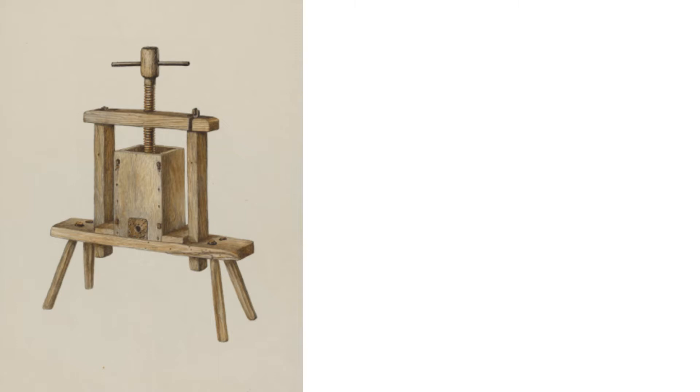In this type of press, a sheet of hessian is placed across the bottom of a square frame above a trough. A layer of pomace, four to five inches deep, is poured onto the hessian. The hessian is then folded over the pomace, completely enclosing it.